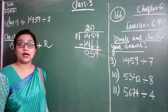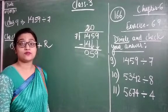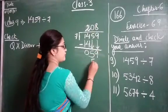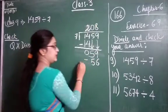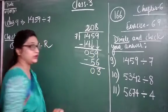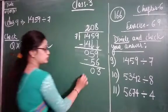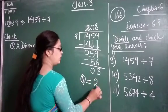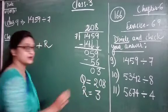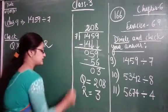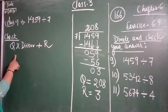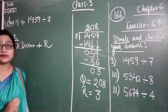The next number is 59. 59 is not in the table of 7, so 7 eights are 56. Then subtract: 9 minus 6 equals 3, and 5 minus 5 equals 0. So the quotient we got is 208 and the remainder is 3. The second step is to check our answer. For checking, the formula is: quotient × divisor + remainder.